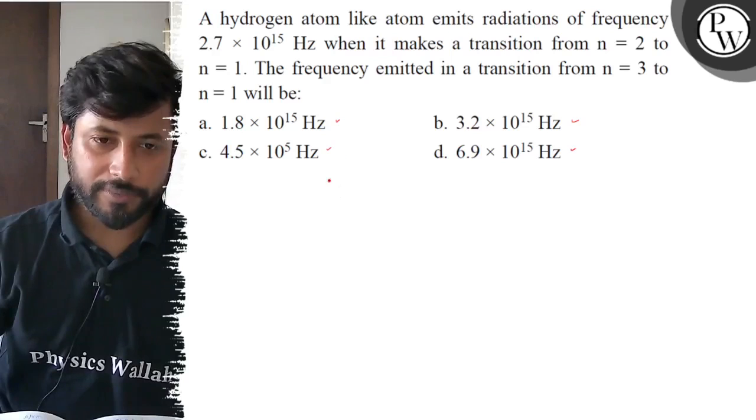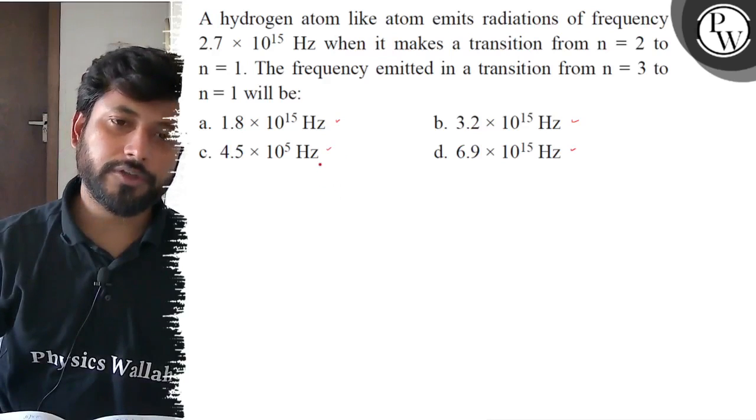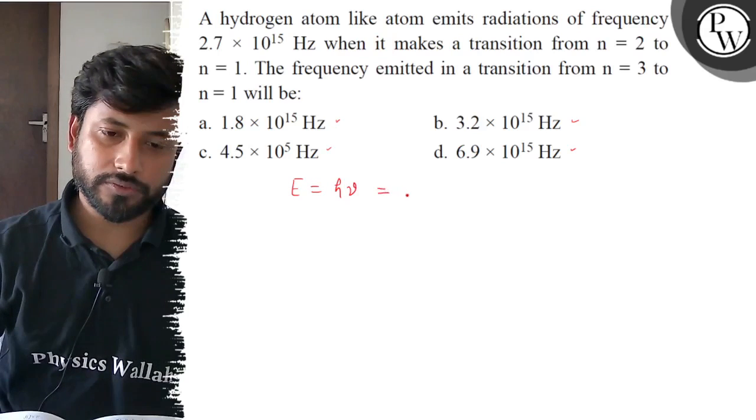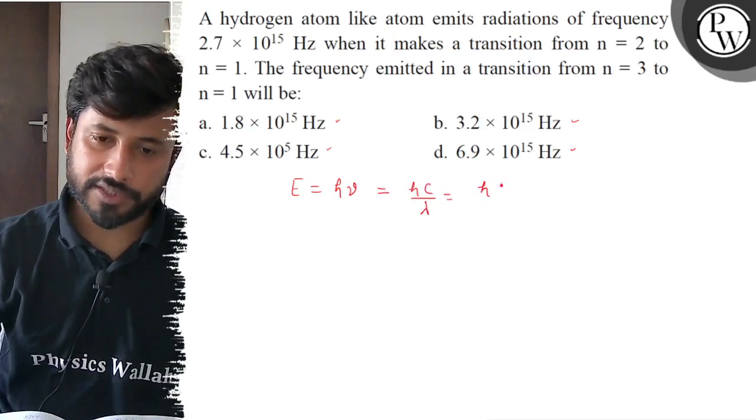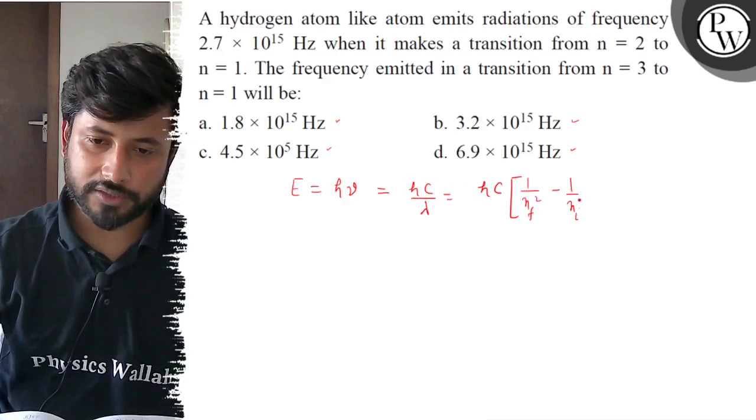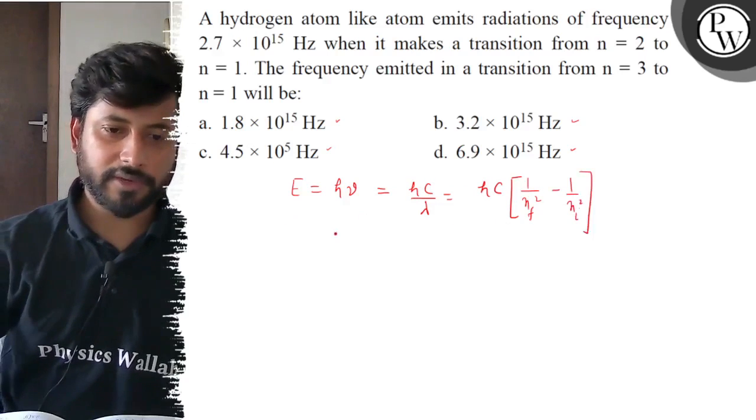What is the frequency in the first case? 2.7 into 10 to the power 15. The energy formula is H mu and that is equal to Hc by lambda. Or then this can be 1 by lambda, 1 by n final square minus n minus square, 1 by 2 square. Now this formula is the first one.